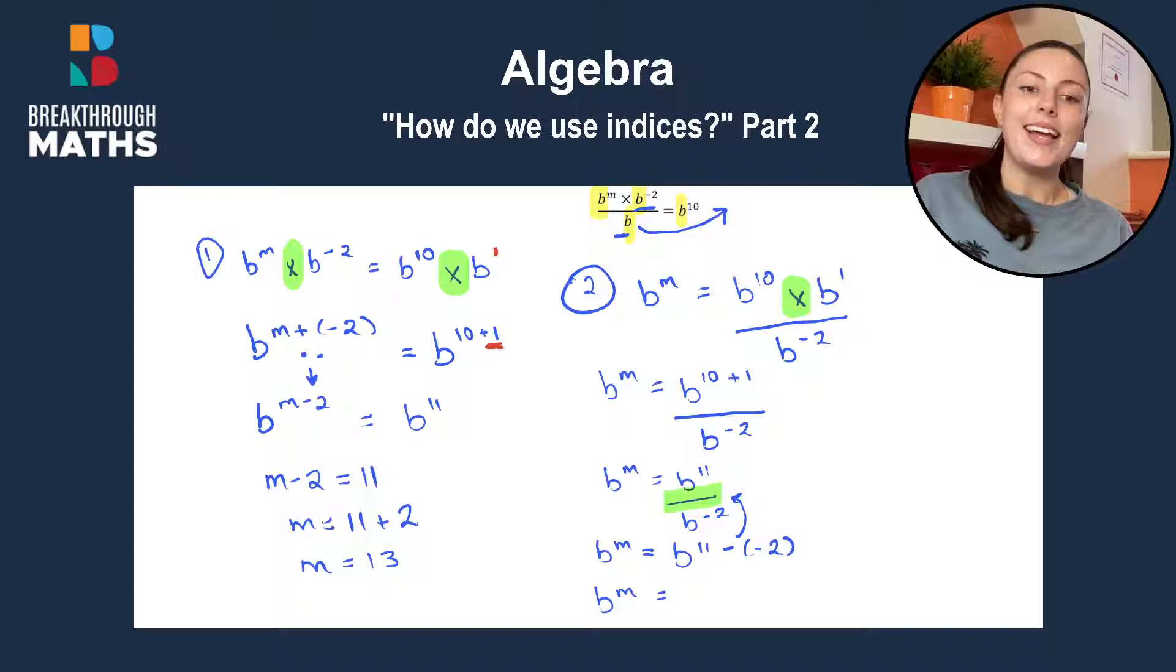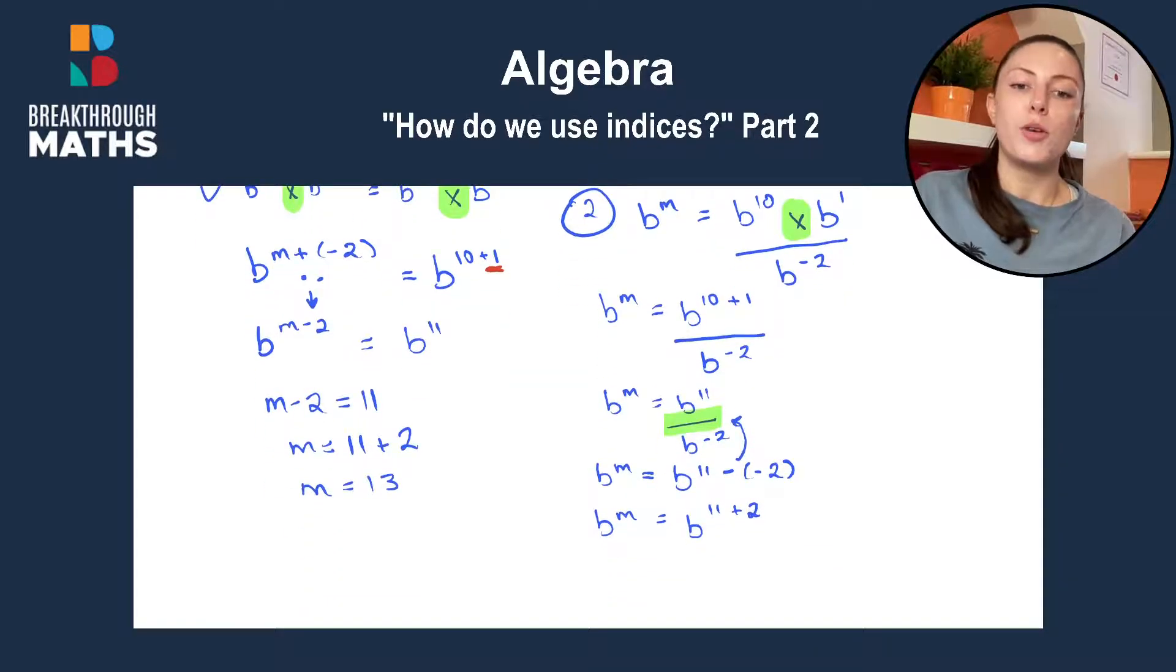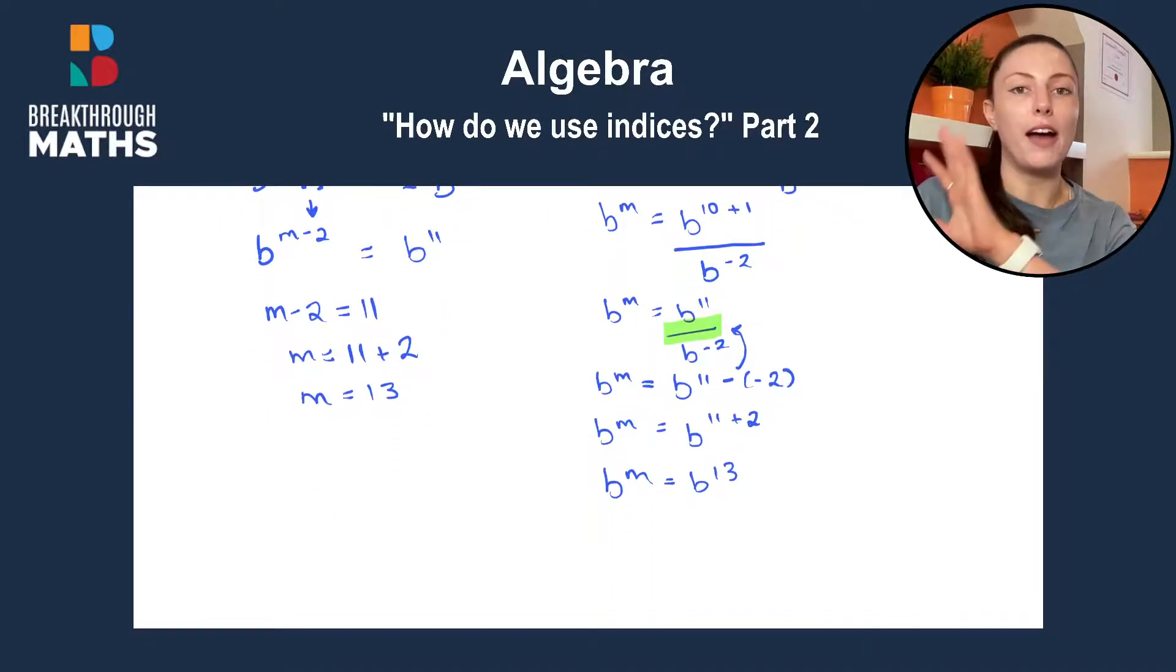which leaves us with B to the power of M is equal to B to the power of 13. And then same thing as before, we have B to the power of something equals B to the power of something else. So we drop our bases and we see that M is equal to 13.